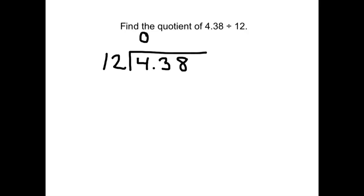If I skip count, 12, 24, 36, 48. 48 is too many times, so it's 3 times. 3 times 12 is 36. Let's see what's left. Looks like 7.